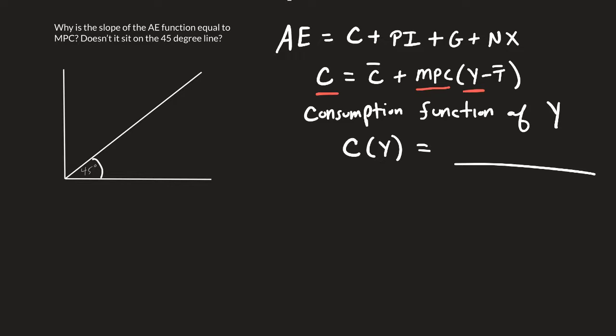That's the definition of marginal propensity to consume. So consumption is a function of real GDP, which means that aggregate expenditure as well would be a function of real GDP.